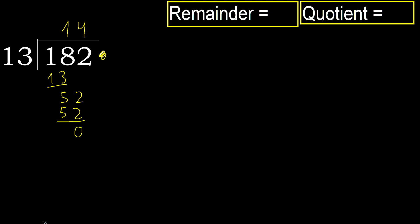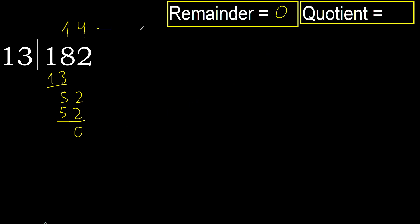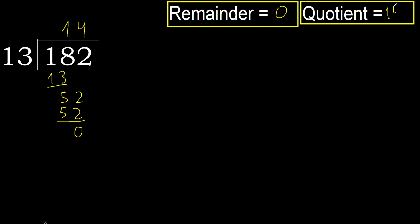That is not a number, therefore finish. 182 divided by 13 is 14.